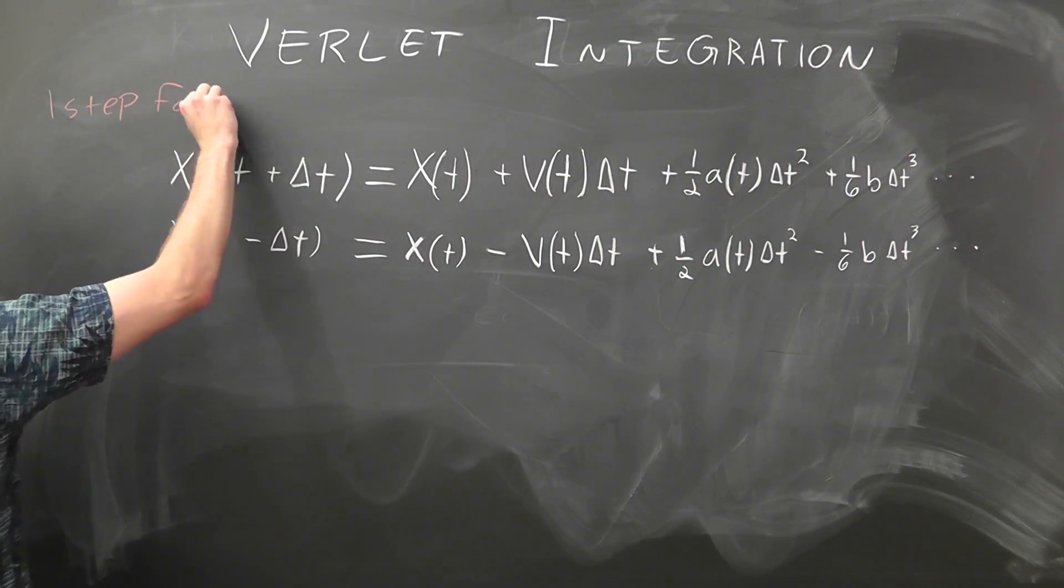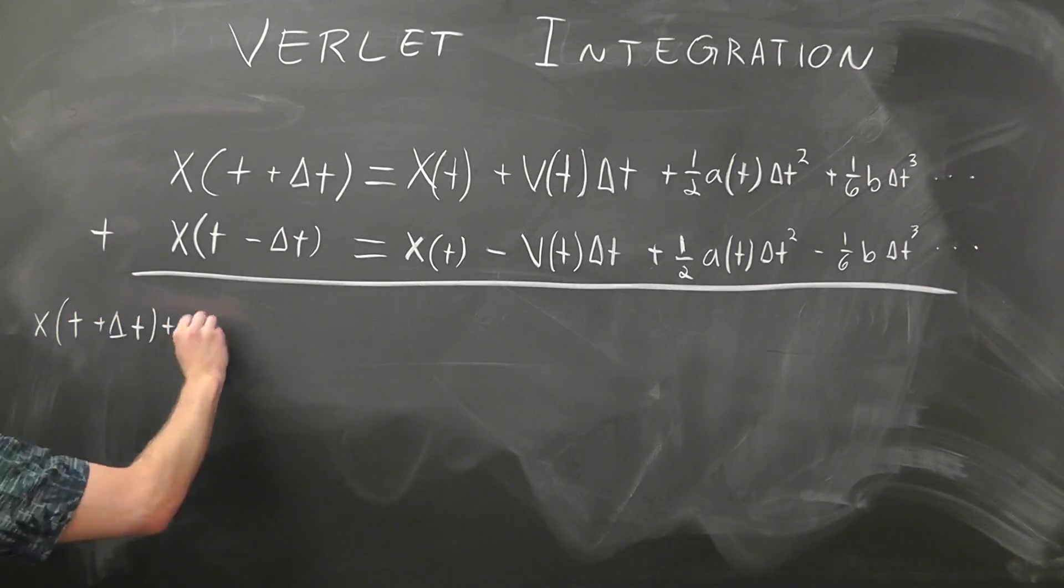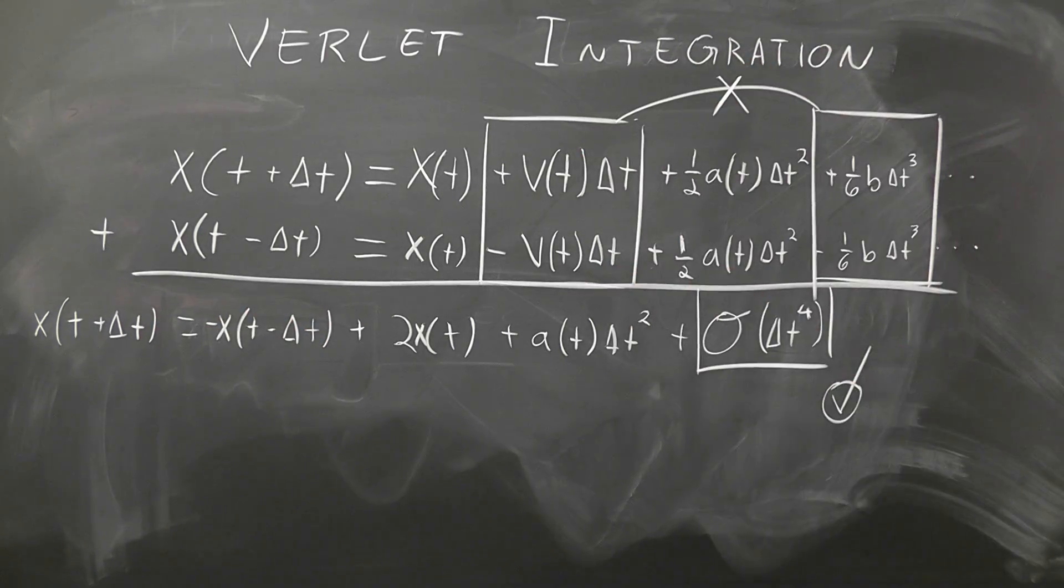In the time step back, we see that both the velocity and jerk terms are negative, which is incredibly important because when we add them together, these terms will cancel out, leaving us with an error term of delta t to the fourth. Which is pretty good,